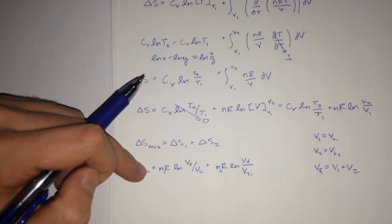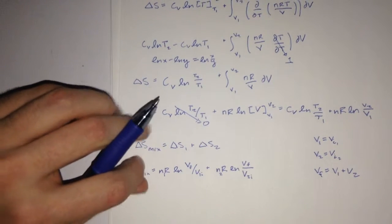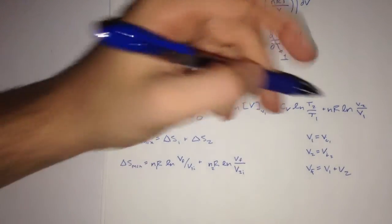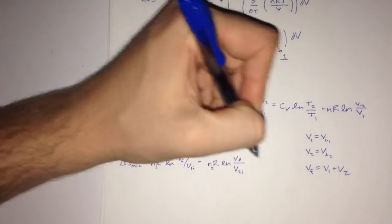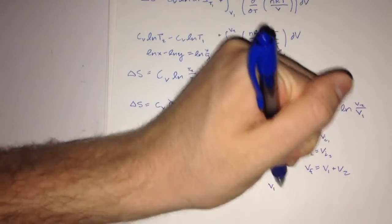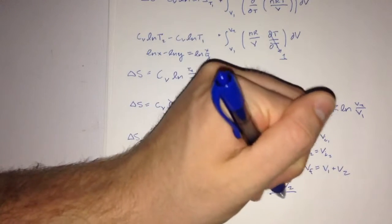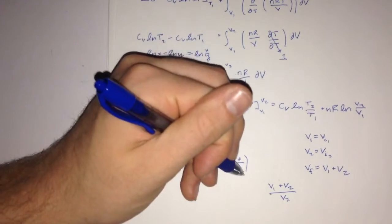However, if we're just given the moles, we can easily find this out too using mole fractions. So as you can see, this v final up here will be equal to v1 plus v2 all over v2. That'll give us this term.